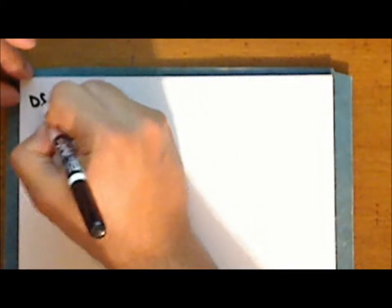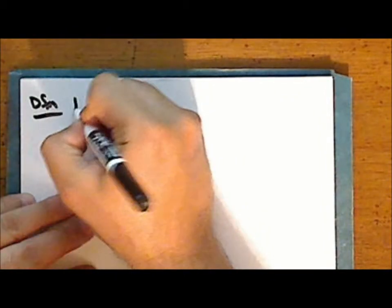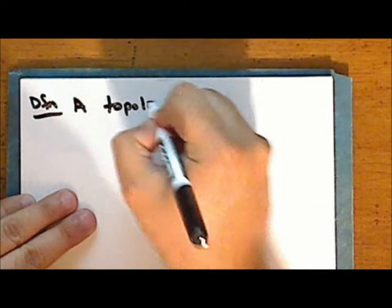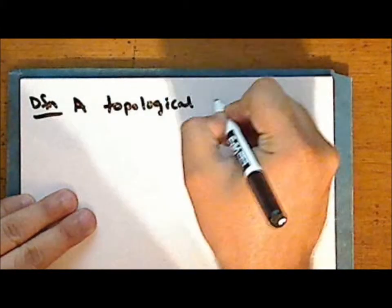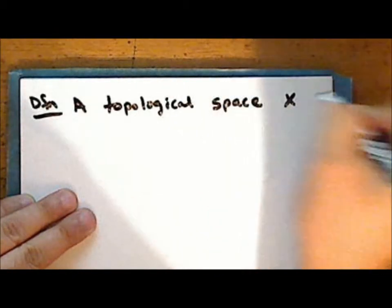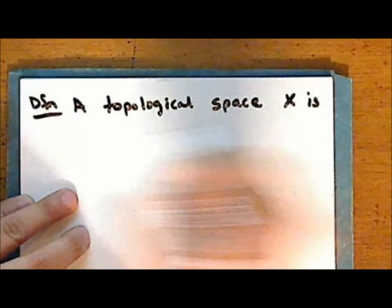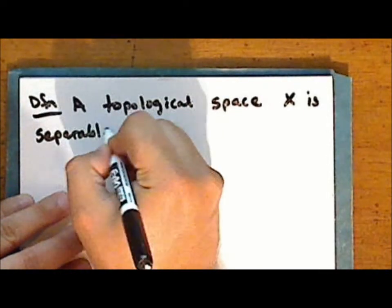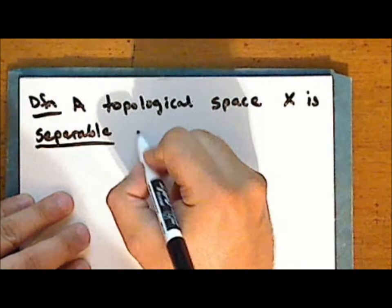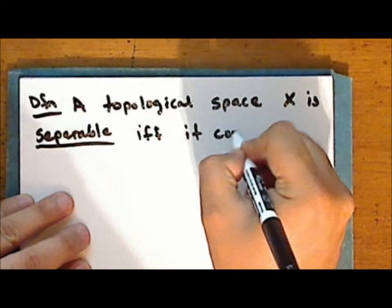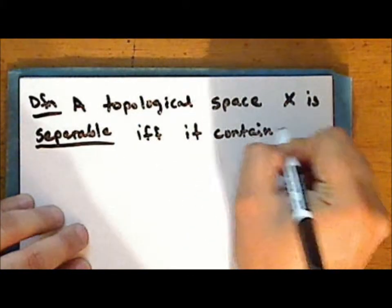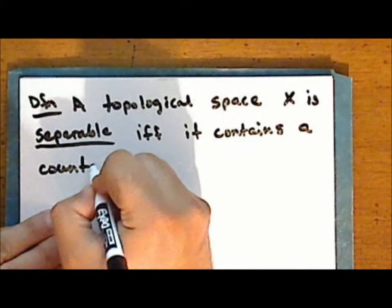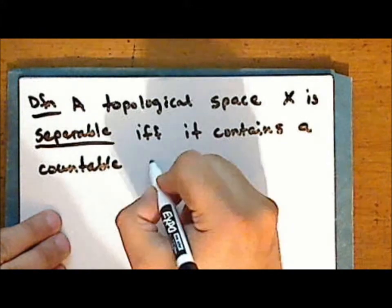New definition: a topological space X is separable if and only if it contains a countable dense subset.